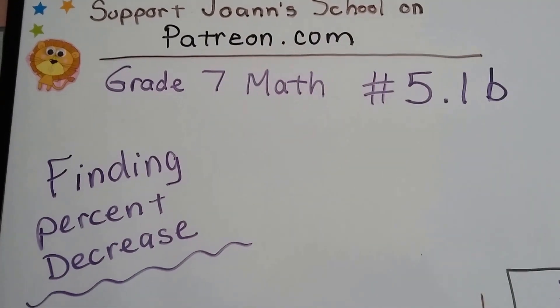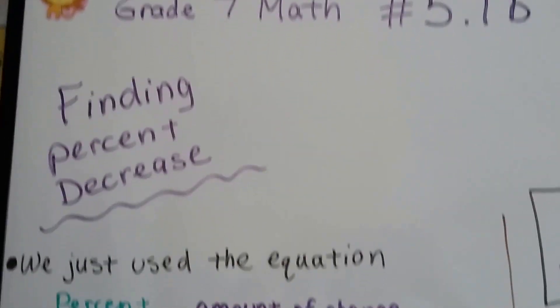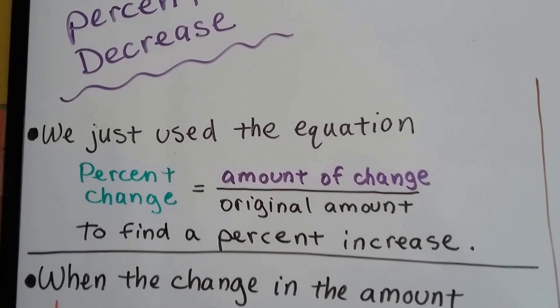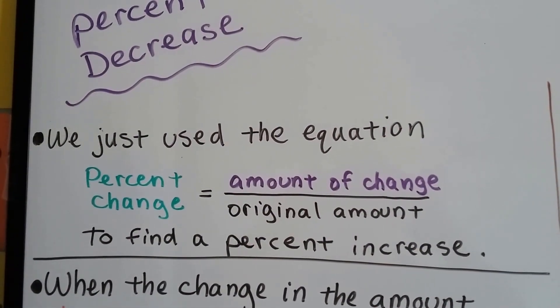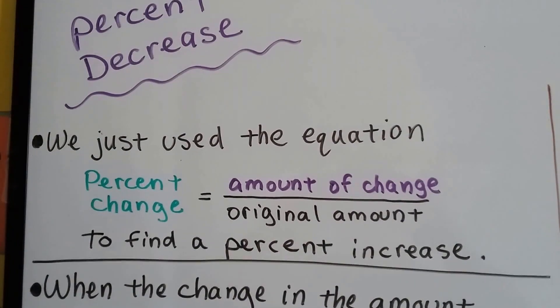Grade 7 math number 5.1b, finding a percent decrease. We just used the equation percent change equals the amount of change over the original amount to find a percent increase.